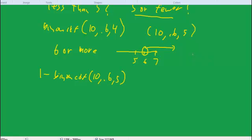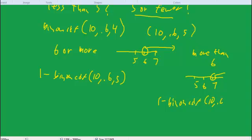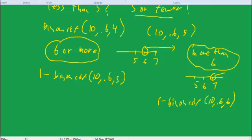On the other hand, if it said more than 6, then I want to start with 7. So that means I want to eliminate everything up to 6. That would be 1 minus binom CDF 10, 0.6, 6. So again, more than differs from 6 or more. And that's it for our binomial distribution.